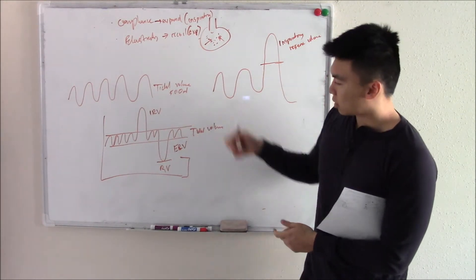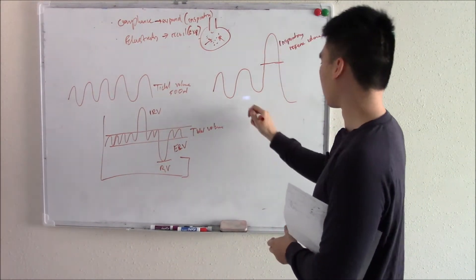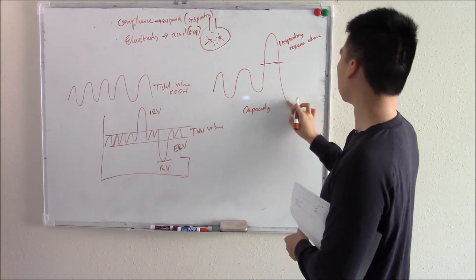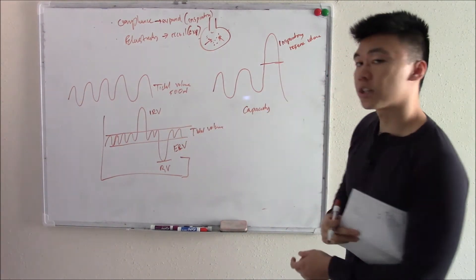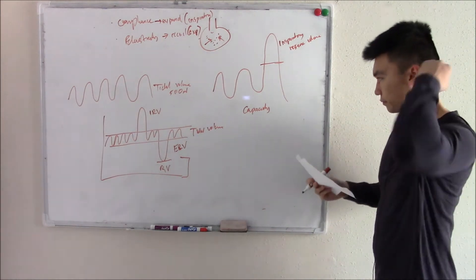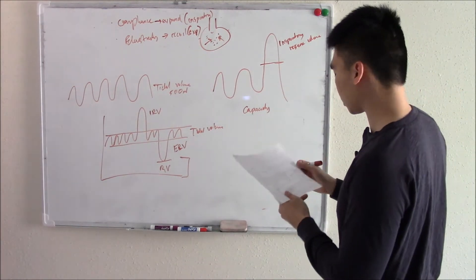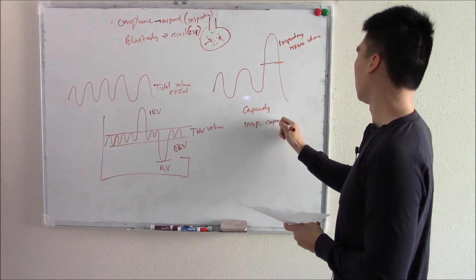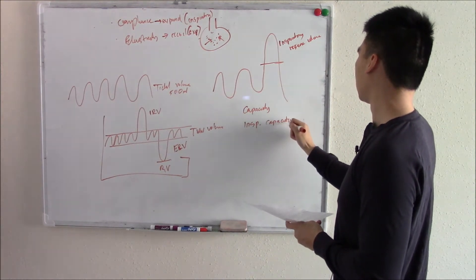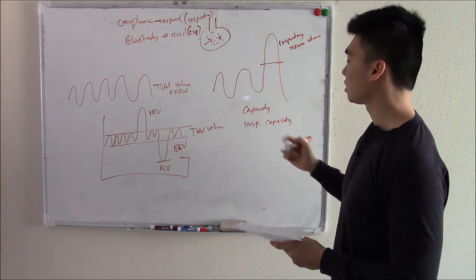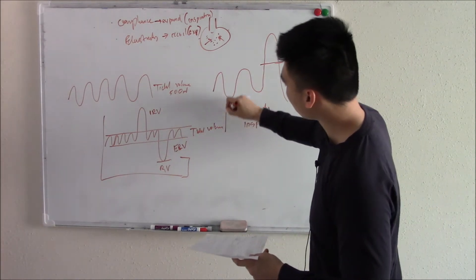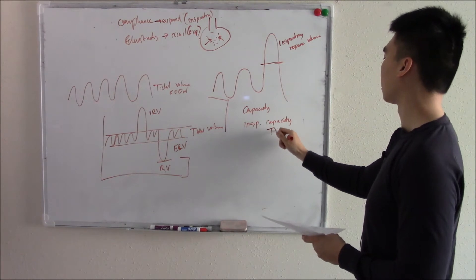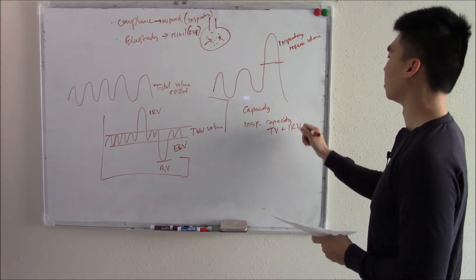Now we can combine some of these terms. Anytime we combine terms, we call that capacity values. Anytime you see capacity, you know they're a combination of terms. There's something called inspiratory capacity. What adds together to make inspiratory capacity? Your tidal volume and your inspiratory reserve volume — so tidal volume plus inspiratory reserve volume.